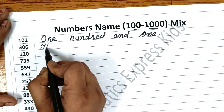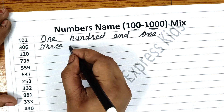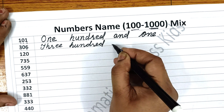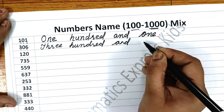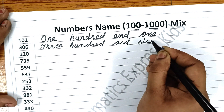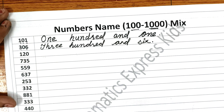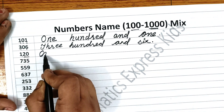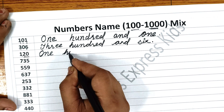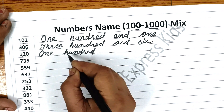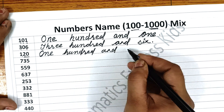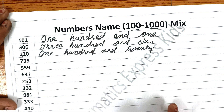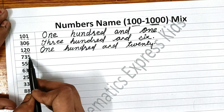The next one is 300. Write three — T-H-R-E-E — hundred — H-U-N-D-R-E-D. 300. And write S-I-X, 6. The next one is 102 — so O and 100 — H-U-N-D-R-E-D — and twenty — T-W-E-N-T-Y. Okay.